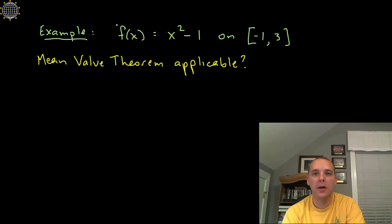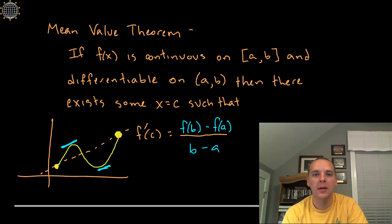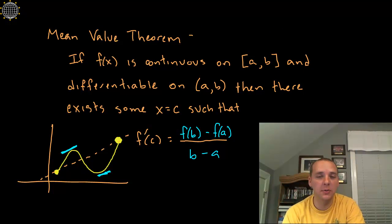Now first of all let's remind ourselves what the mean value theorem says or what its requirements are. It says if your function is continuous, which means it doesn't have any breaks, asymptotes, jumps, or holes in it on a closed interval, and it's differentiable on that open interval, then what it guarantees us is at least one point whose slope specifically at that x value agrees with the average slope over the entire interval, as you can see in your picture here.